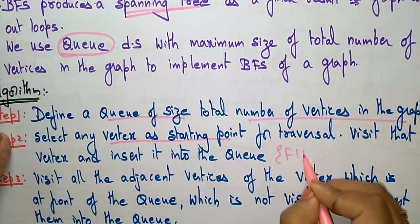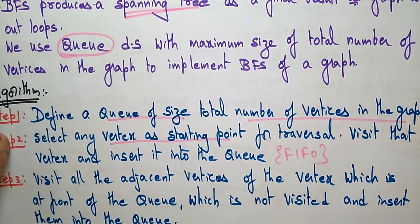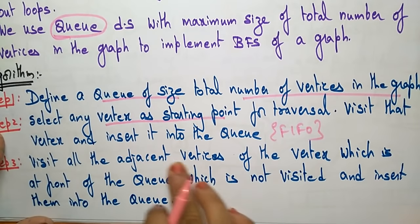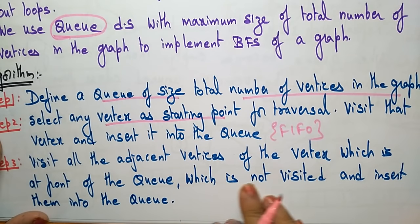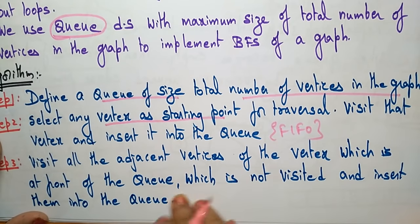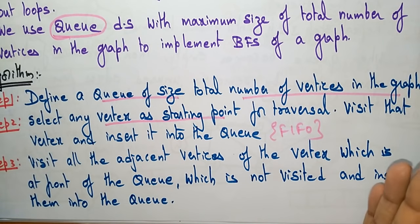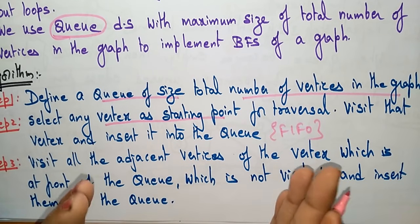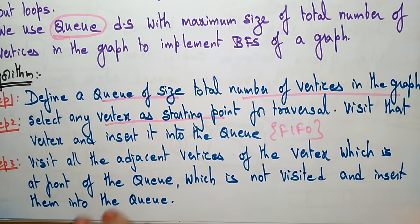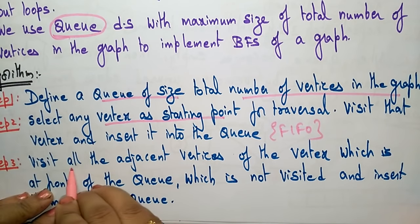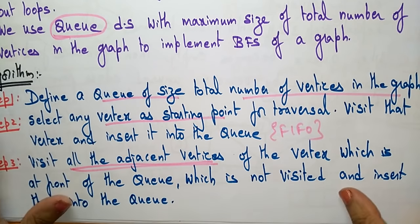The queue follows first-in first-out — whatever element you insert first will come out first. Visit all adjacent vertices of the vertex at the front of the queue which have not been visited, and insert them into the queue. In DFS you visit just one adjacent vertex, but in BFS you visit all adjacent vertices and place them in the queue.